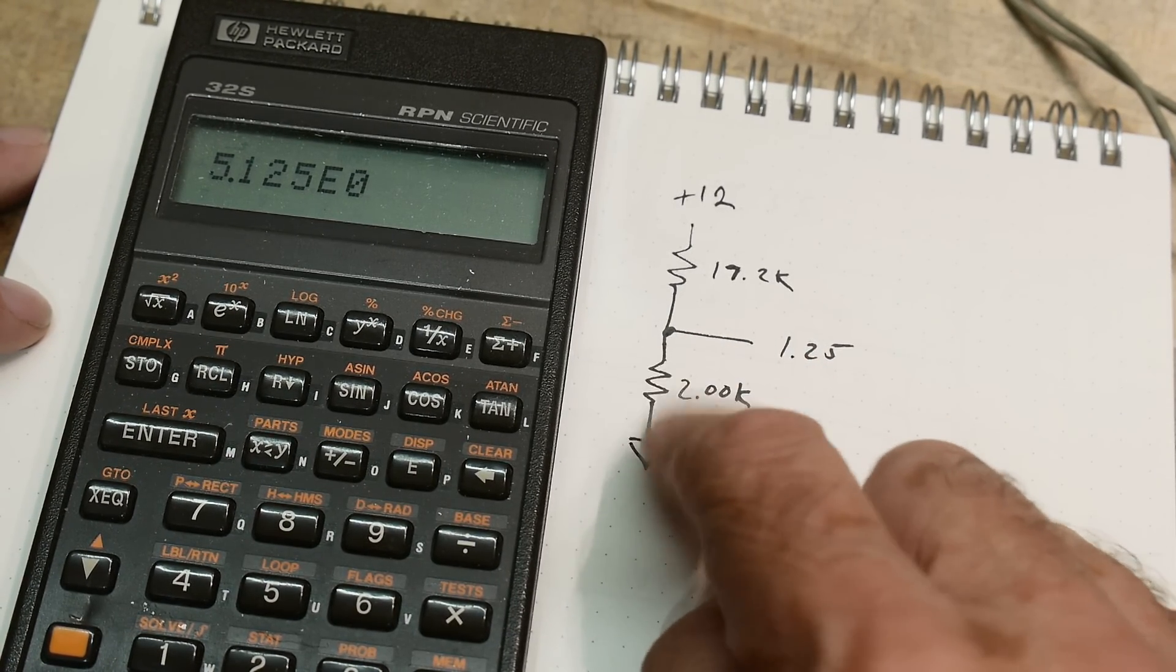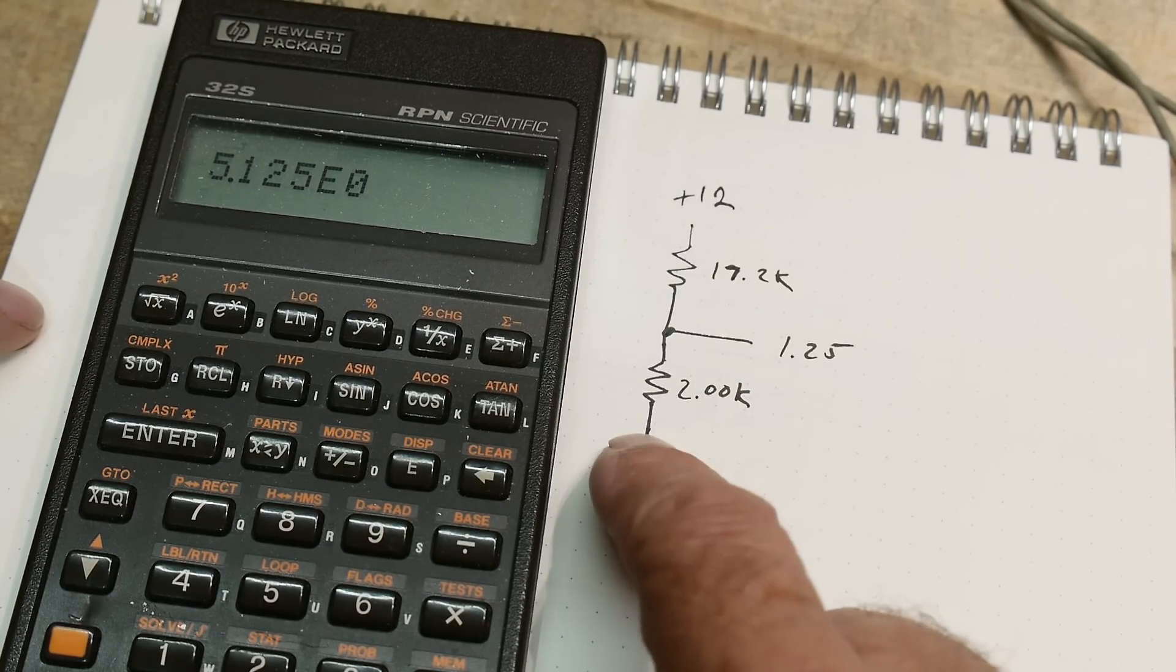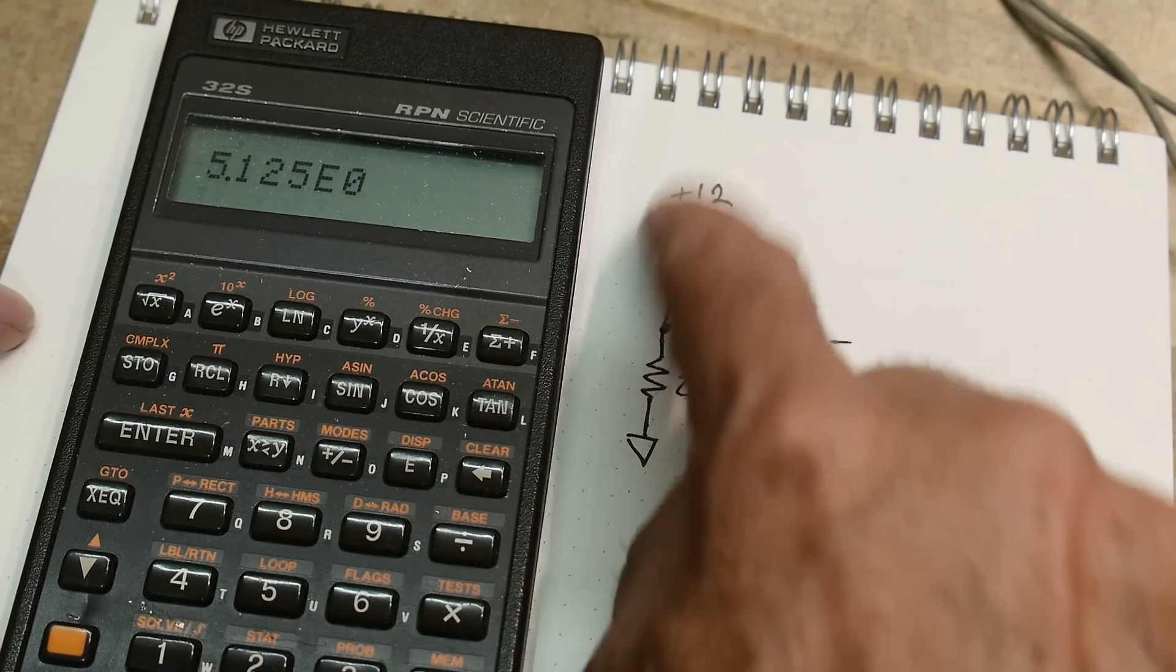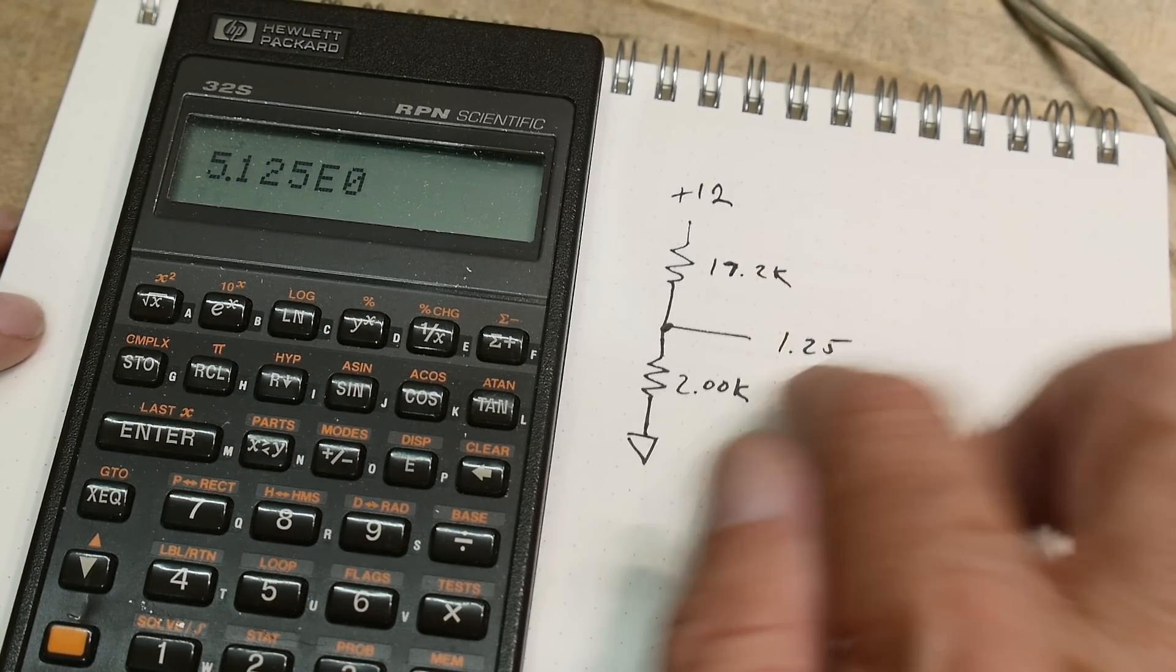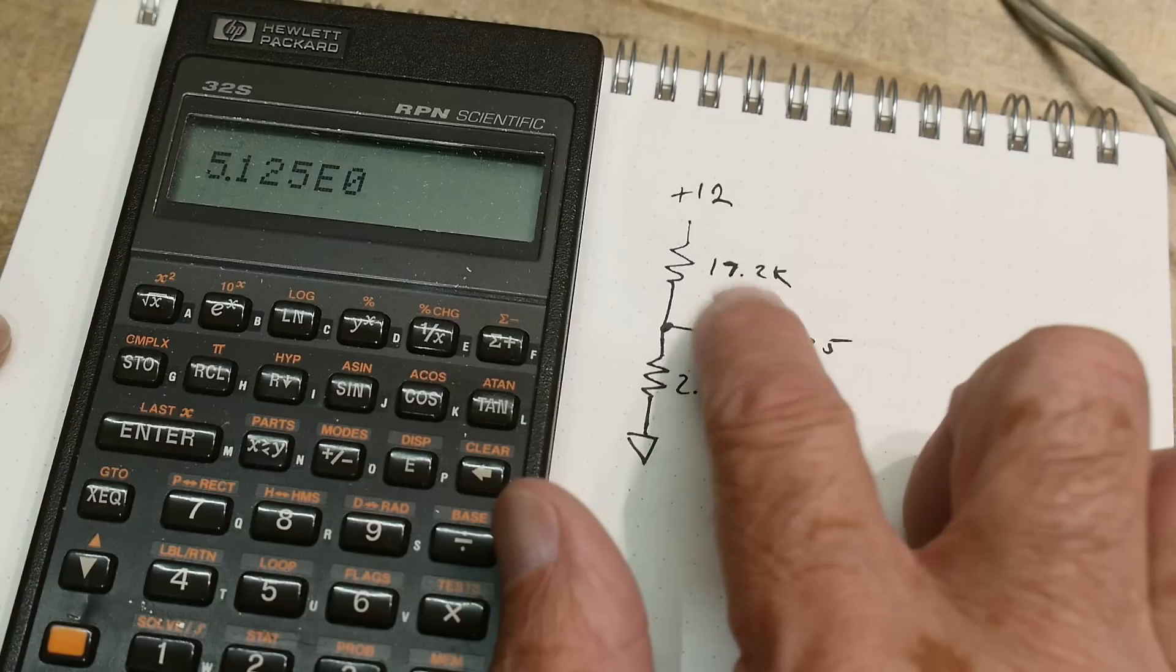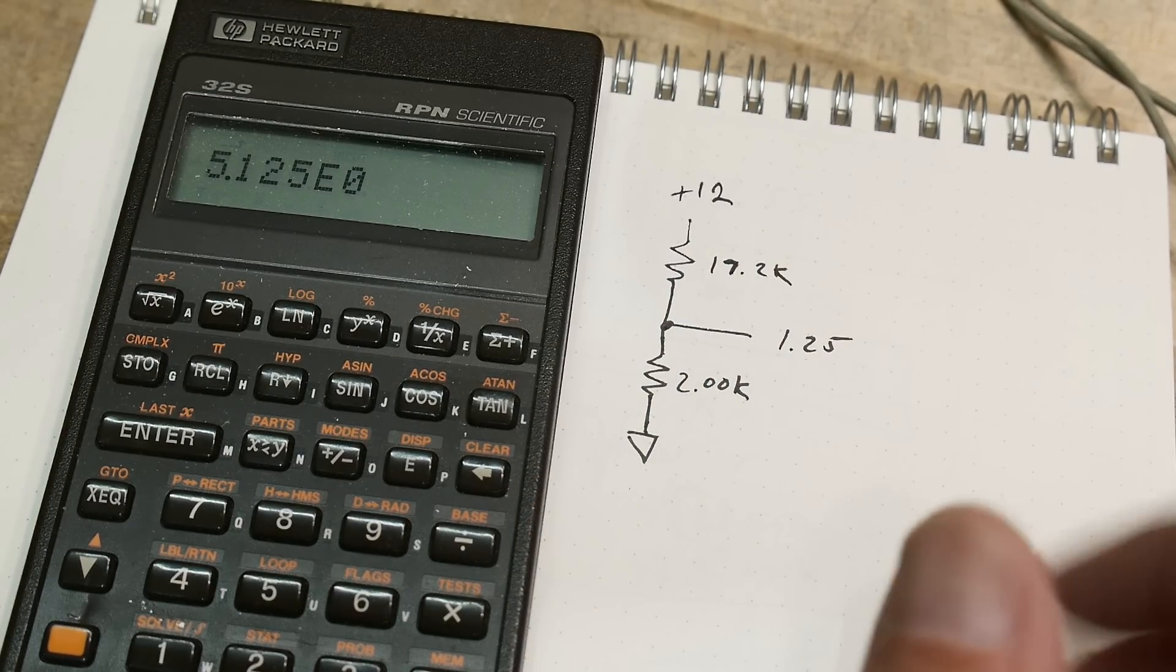I said okay, 1.25 is a certain current and that current is in the string and then you can do the math and you come up with 17.2k. So 17.2k, you can do this as homework. I want to replace this 6.2k with a 17.2k.